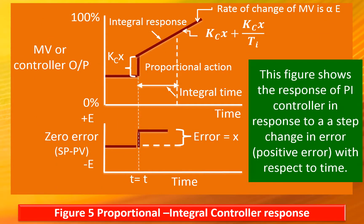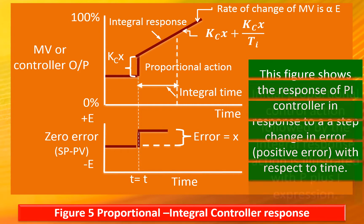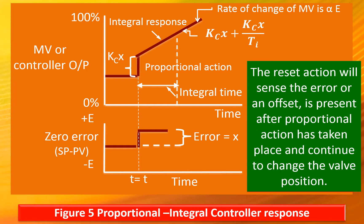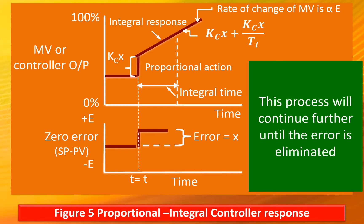This figure shows the response of a PI controller in response to a step change in positive error with respect to time. Initial proportional control action followed by the integral response action is illustrated with the P + I expression. The reset action will sense the error or offset present after proportional action has taken place and continue to change the valve position. This process will continue until the error is eliminated.